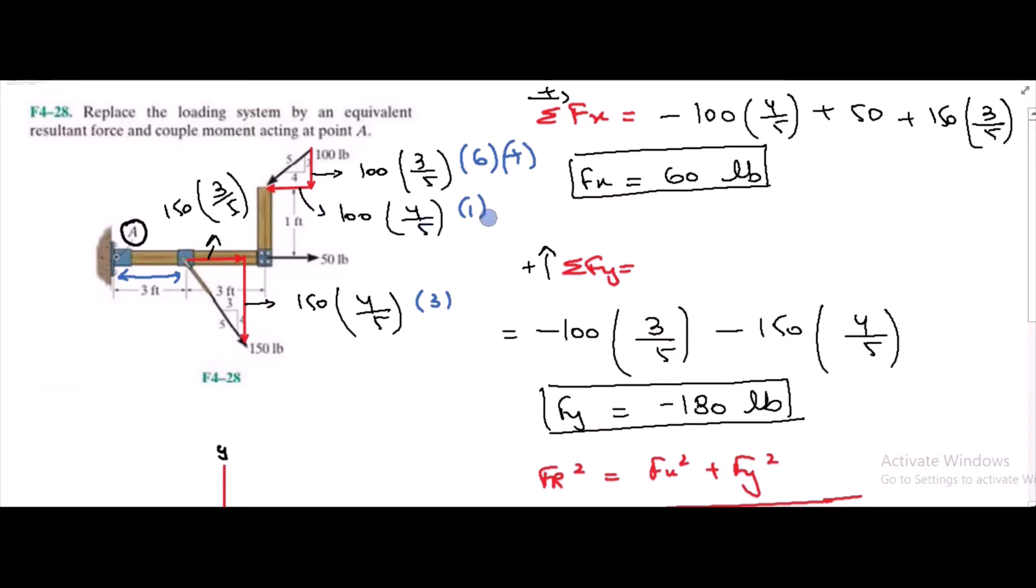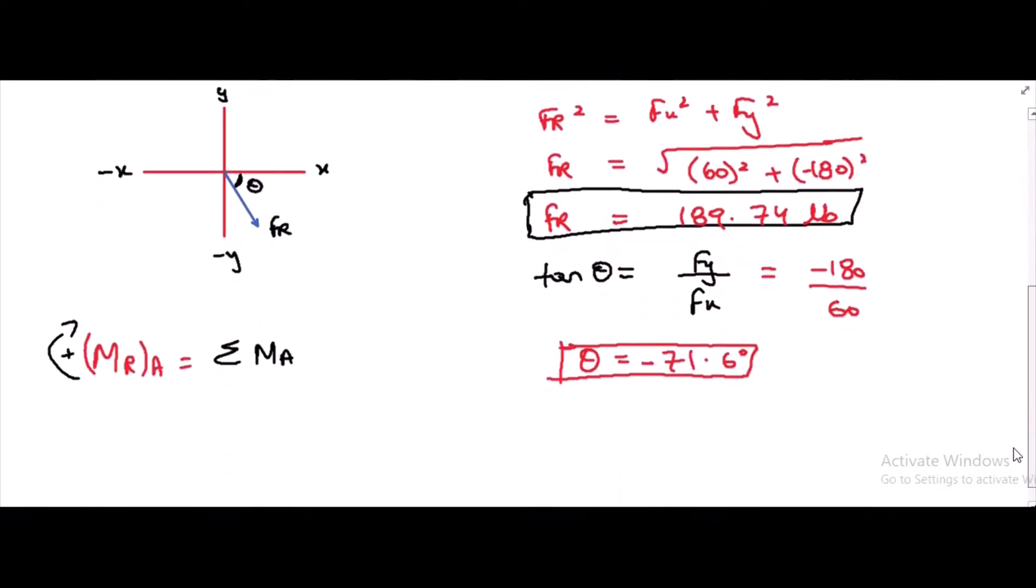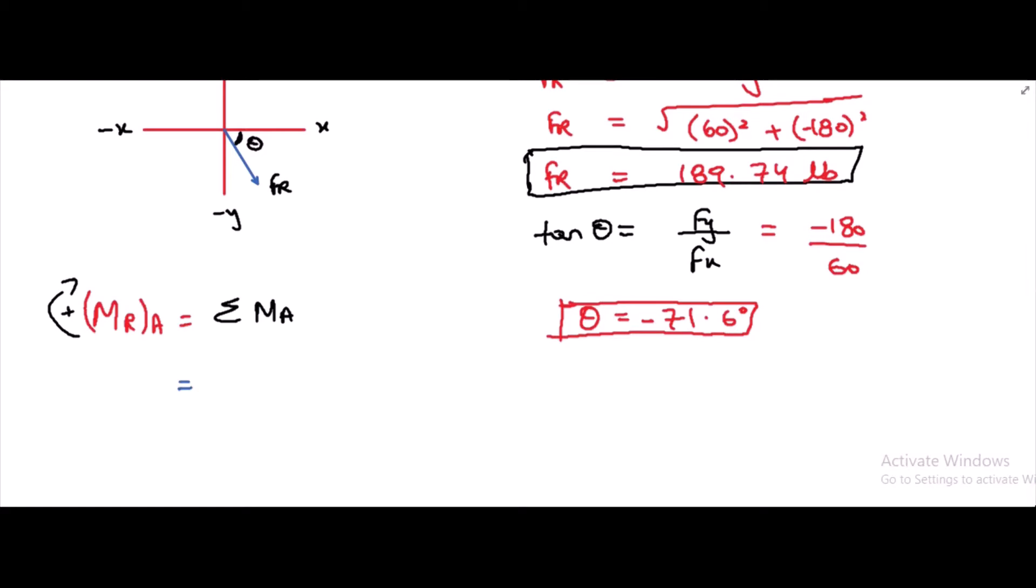The 100 lb vertical force is trying to rotate the assembly in clockwise direction, so it is taken as positive. This horizontal component is trying to rotate it into counter-clockwise direction, so it is negative. Similarly, this vertical component is also producing the moment in the clockwise direction, so it is also taken as positive. So we have 100 times 3 over 5 times 6 minus 100 times 4 over 5 times 1 plus 150 times 4 over 5 times 3. From here, the couple moment about point A is equal to 640 lb-ft.